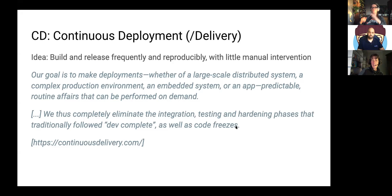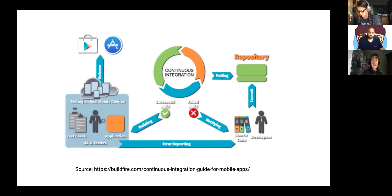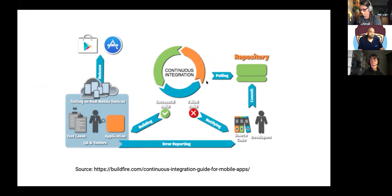This is the rough idea: you as a developer push to the repo, and from there on everything hopefully happens automatically. You have a CI/CD framework that gets triggered, that triggers a new build whenever the repo is updated. Your code is automatically tested and built. If it builds correctly, it is automatically deployed. If the build fails or the test fails, you'll be notified.